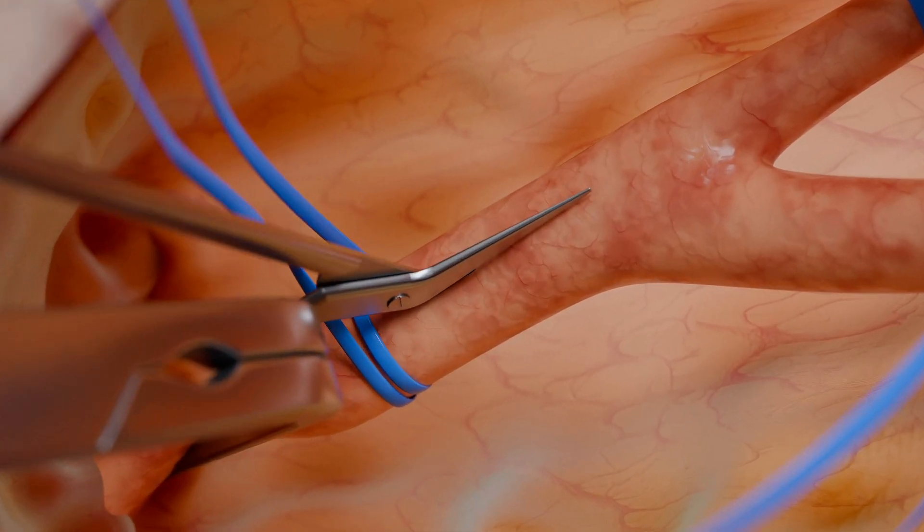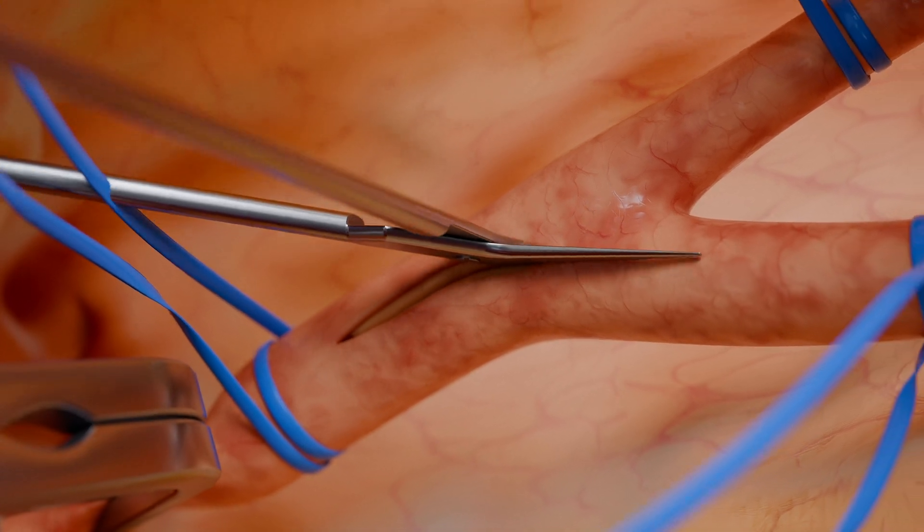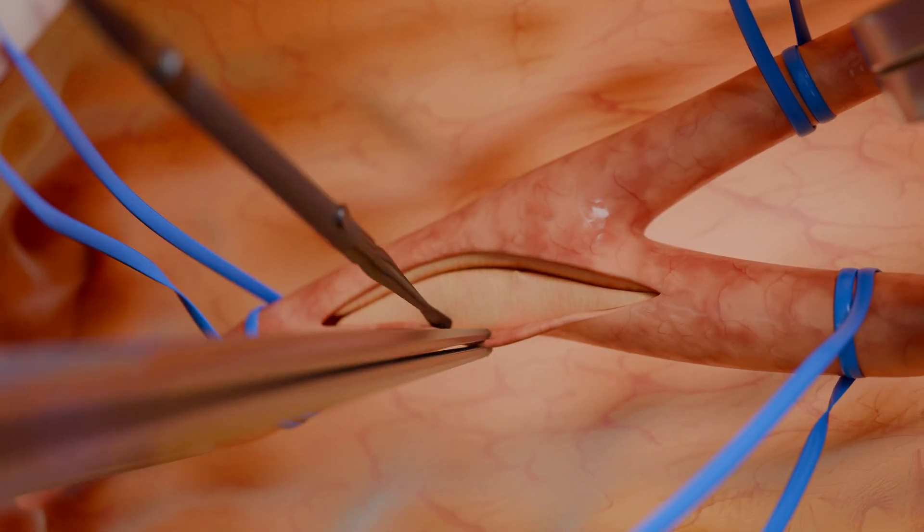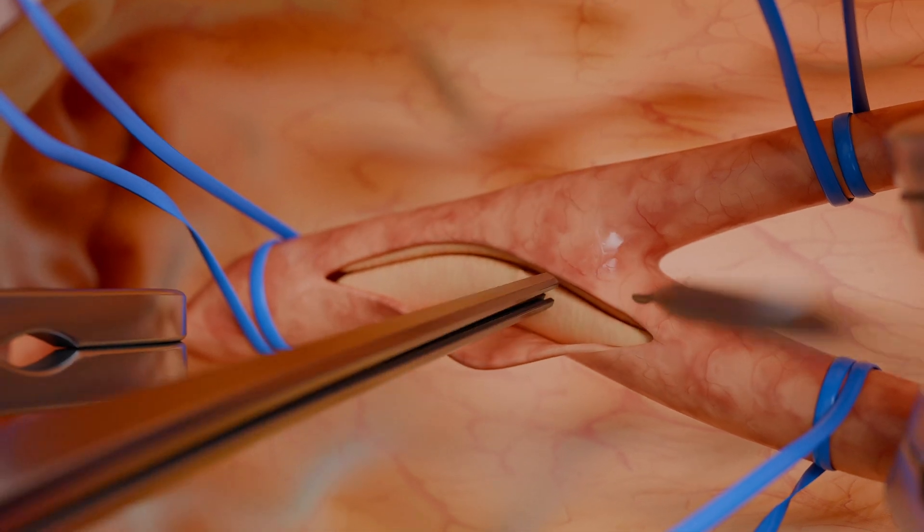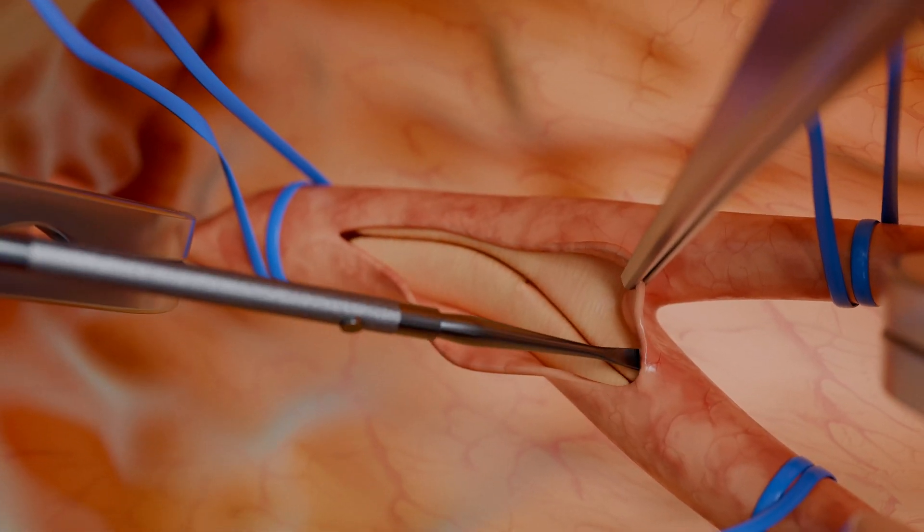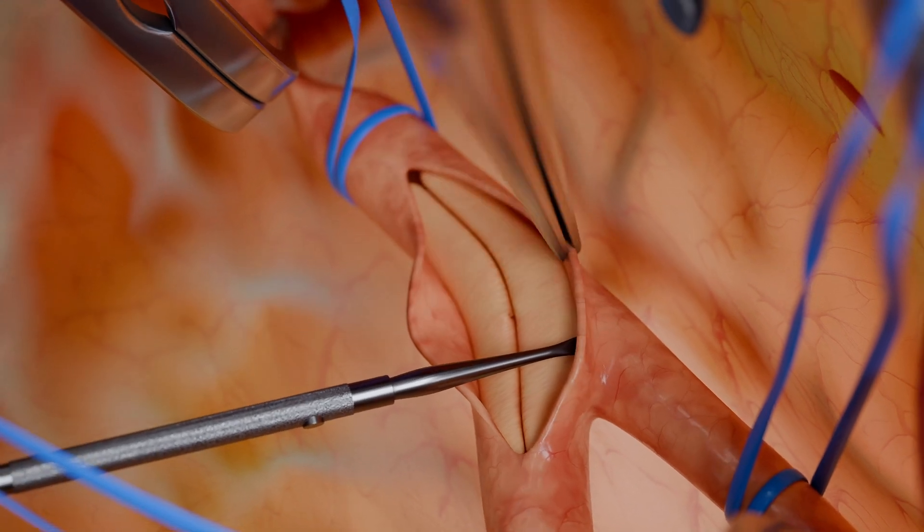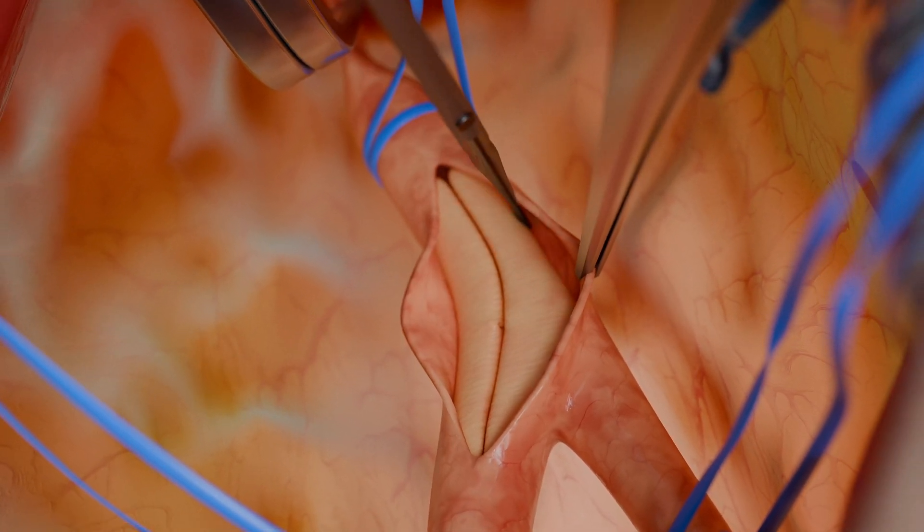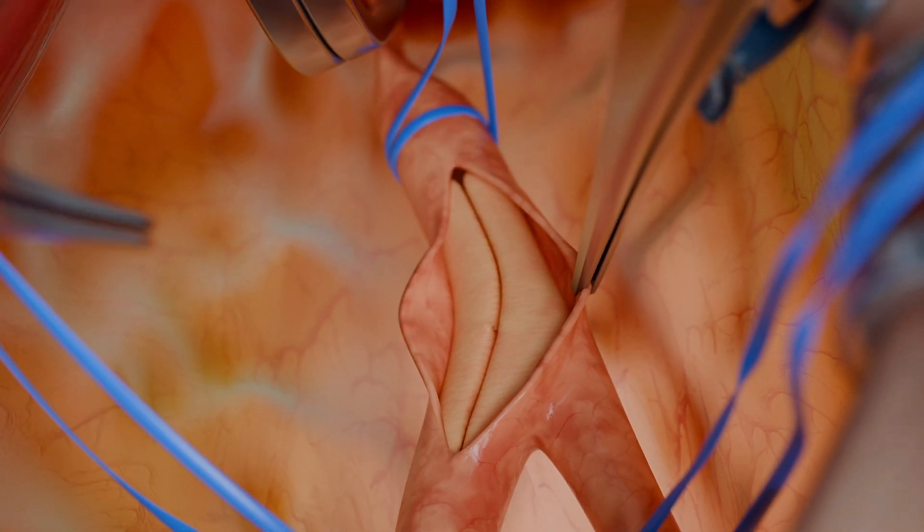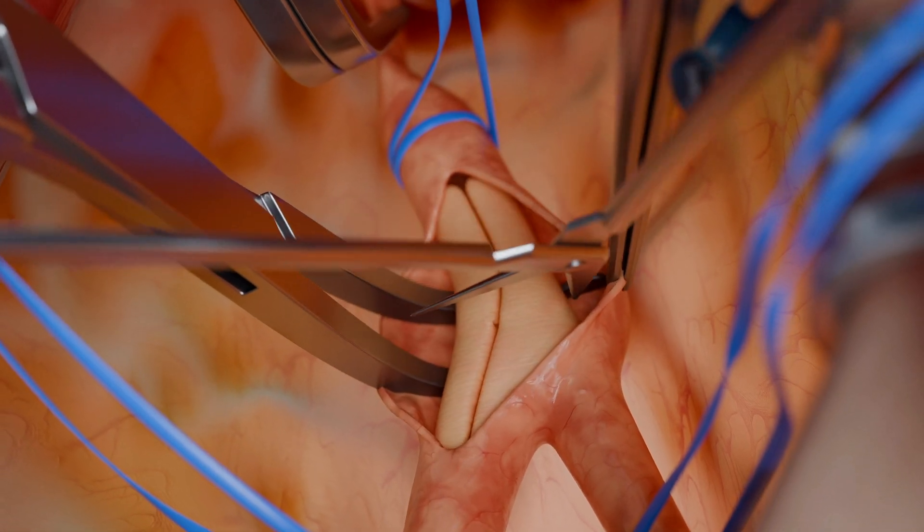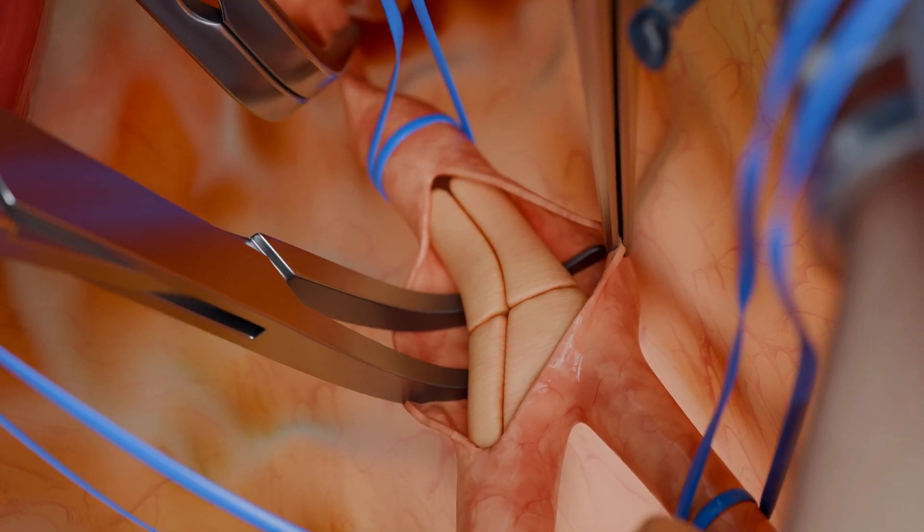Next, they open the artery at the site of the plaque. Using a special elevator, the surgeon separates the plaque from the arterial wall and removes it from the lumen of the vessel, either in one piece or in smaller sections.